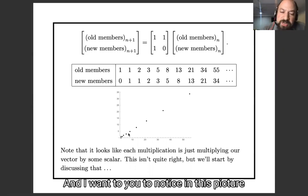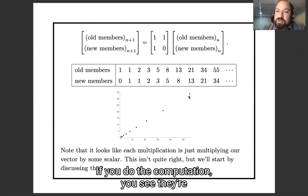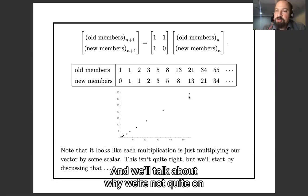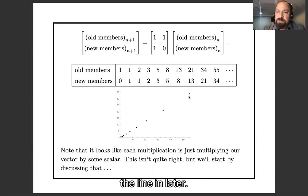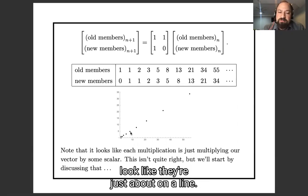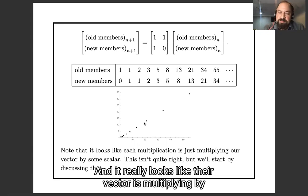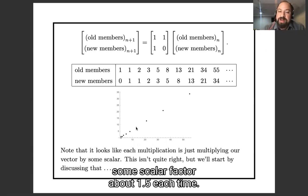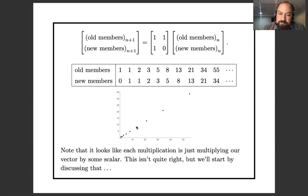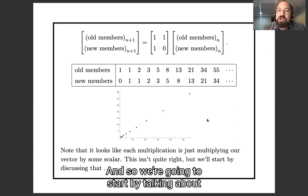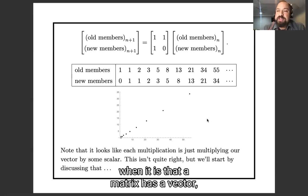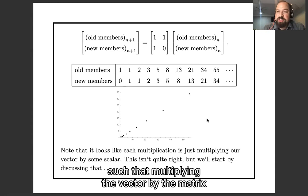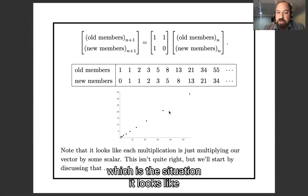What I want you to notice in this picture is that all these vectors look like they're on a line. If you do the computation, you'll see they're not quite on a line, and we'll talk about why later. But they really look like they're just about on a line, and it really looks like the vector is multiplying by some scalar factor about one and a half each time. So we're going to start by talking about when a matrix has a vector such that multiplying the vector by the matrix just gives a scalar multiple of the same vector. By the end, we'll see what's exactly happening here.